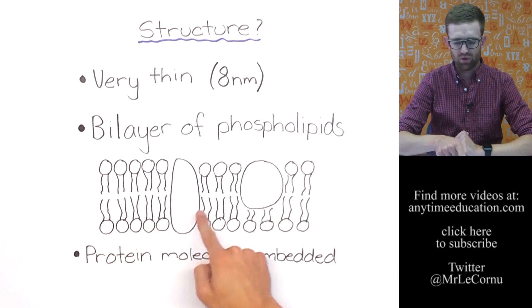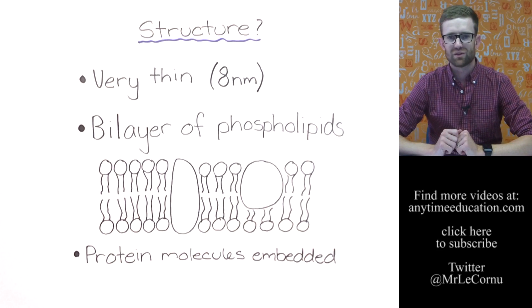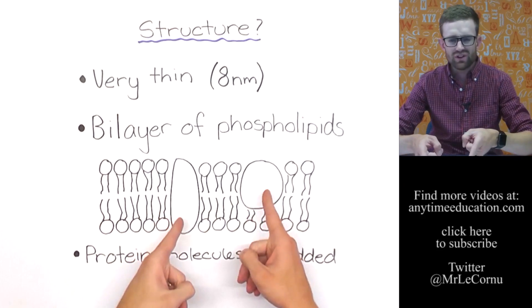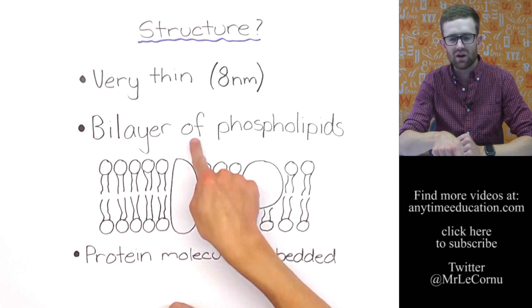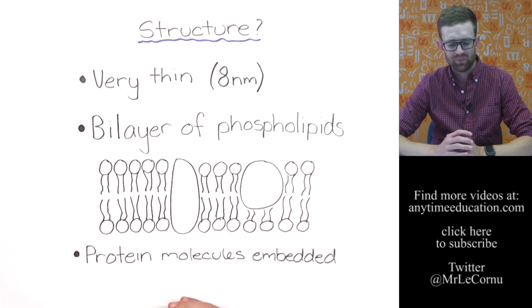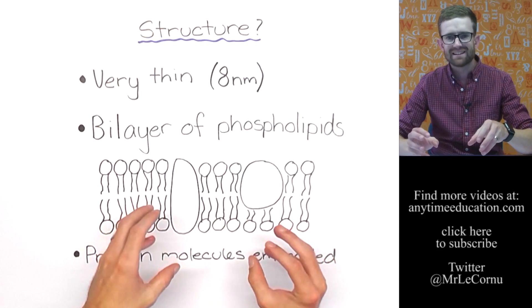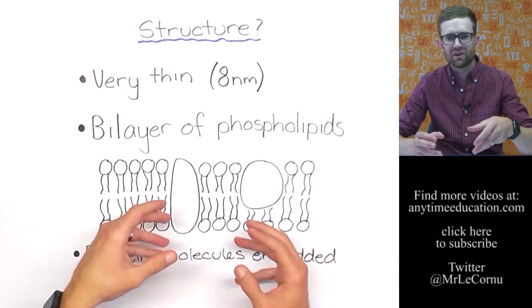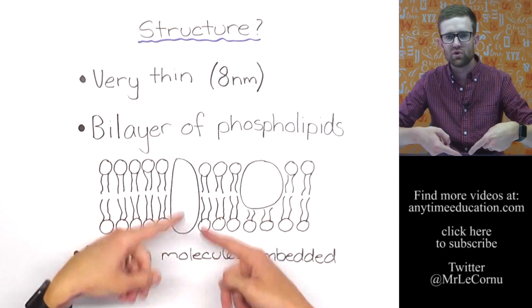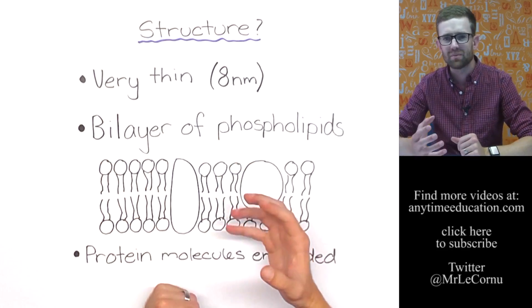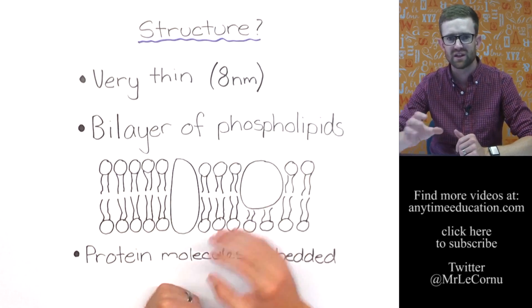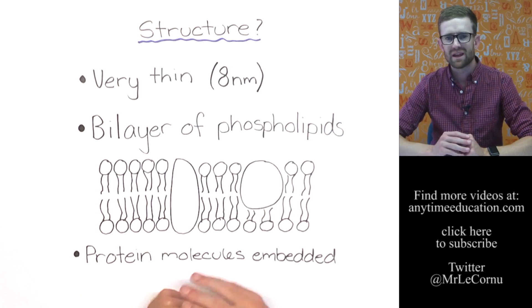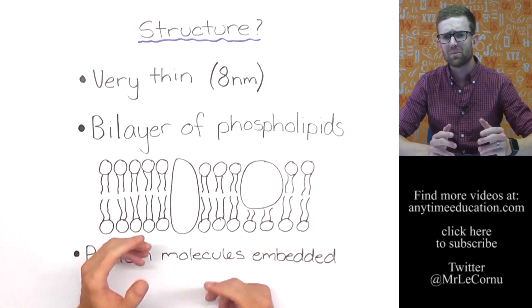Now the proteins are there for an important reason. Some of them have carbohydrates attached to them, not all of them but some. And the proteins act as channel proteins to allow things to move in and out of the cell, or receptor proteins to help the cells recognize other chemical messages or other cells themselves. So they play a really pivotal role.